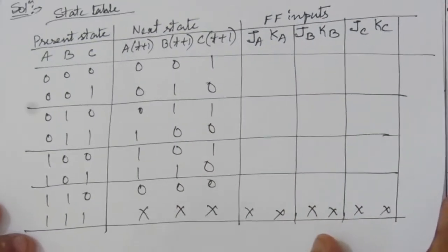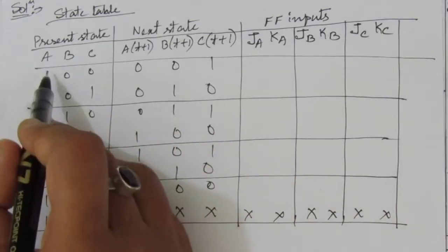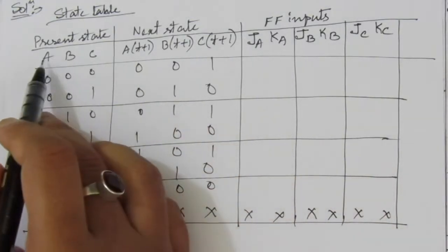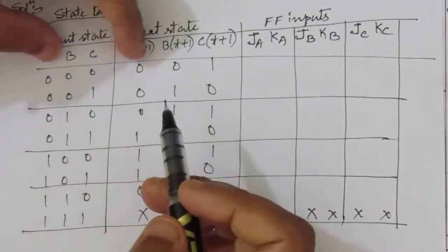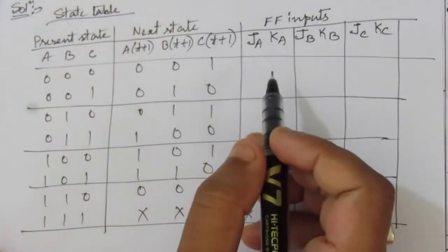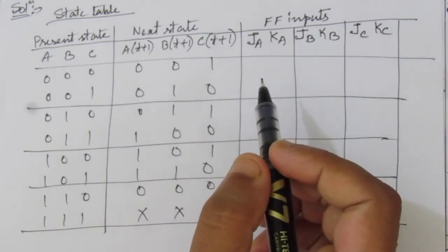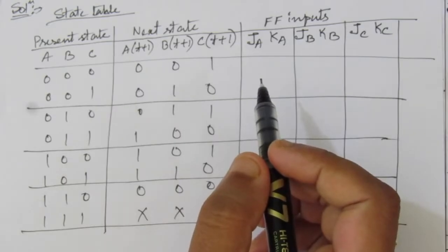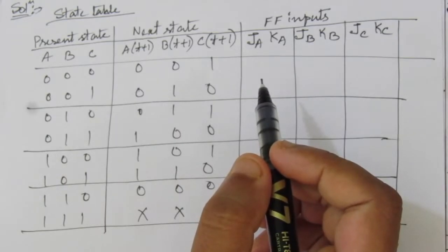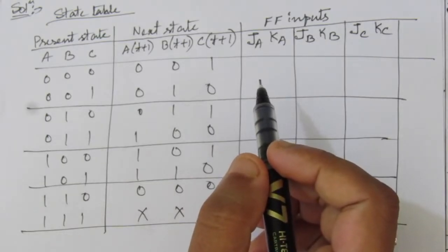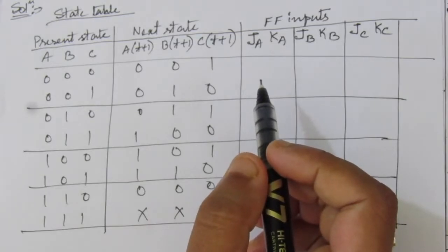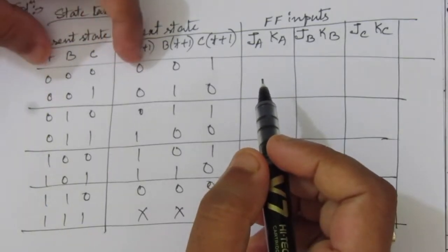Now let us find out the JA and KA values. To find these, we use the excitation table of the JK flip-flop. We look at the present state column and the next state column for A. The excitation table tells us: if present state is 0 and next state is 0, then J=0 and K=don't care; if 0→1 then J=1, K=don't care; if 1→0 then J=don't care, K=1; if 1→1 then J=don't care, K=0.